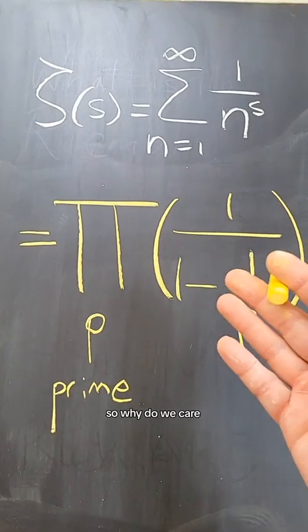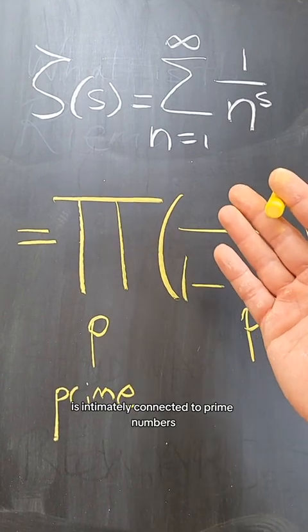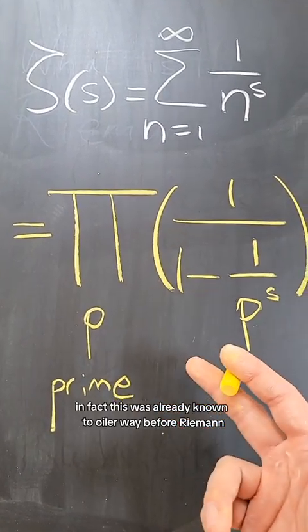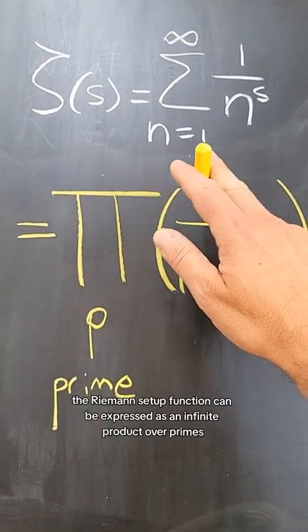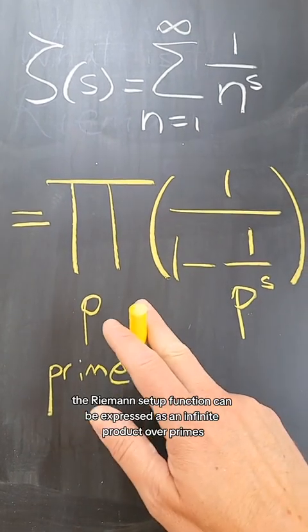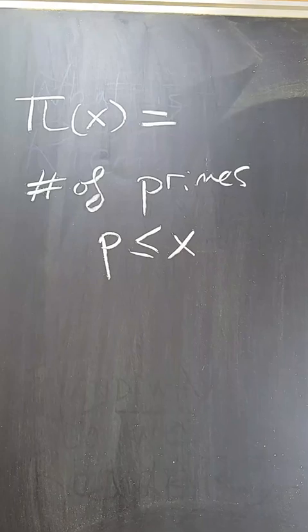So why do we care? We care because the Riemann zeta function is intimately connected to prime numbers. In fact, this was already known to Euler way before Riemann that, for example, the Riemann zeta function can be expressed as an infinite product over primes of these factors. But the reason why